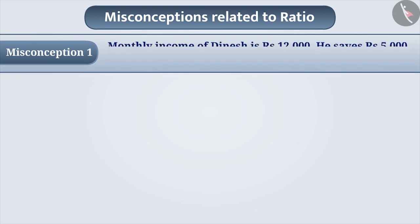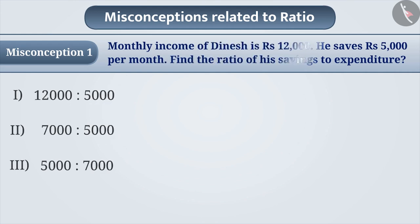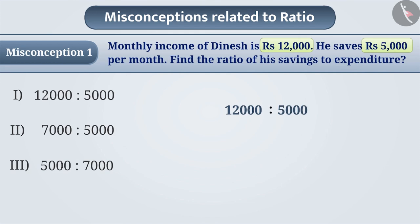Misconception 1. The monthly income of Dinesh is Rs. 12,000. He saves Rs. 5,000 per month. Find the ratio of his savings to expenditure. Some students don't understand the question properly. Ignoring what was asked in the question, they simply represent the given numbers in the ratio form. This way, they choose option 1 as the answer, which is incorrect.